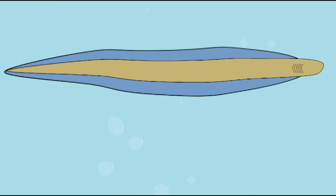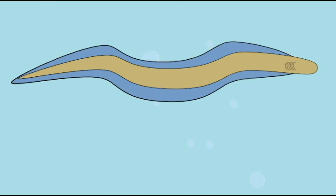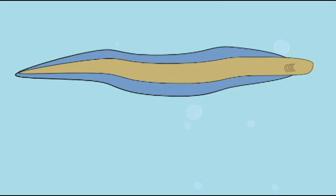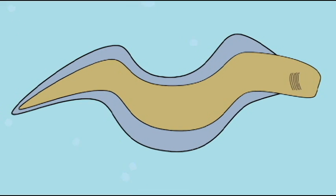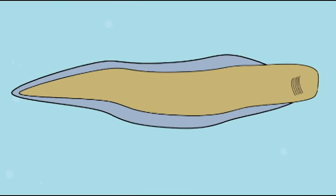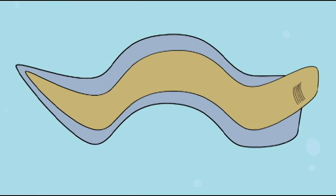The eurochordates and cephalochordates are the true chordates. They actually have a notochord, which is a support rod prior to the evolution of a backbone, which the primitive vertebrates all possessed.